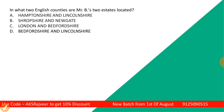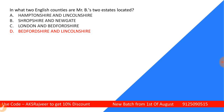The next question: In what two English counties are Mr. B's two estates located? The options are Hamptonshire and Lincolnshire, Shropshire and Newgate, London and Bedfordshire, or Bedfordshire and Lincolnshire. The correct answer is Bedfordshire and Lincolnshire. On both these places you can see the home of Mr. B. Mr. B is the main character in this work — though Pamela Andrews is the main character, Mr. B plays a major role as he is second to Pamela.